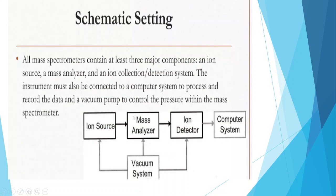A schematic of the instrument shows: ion source, mass analyzer, ion detector, and computer system. A vacuum system must also be present. All mass spectrometers contain at least three major components: an ion source, a mass analyzer, and an ion collection or detection system. The instrument must also be connected to a computer system to process and record the data, and a vacuum pump to control the pressure within the mass spectrometer.